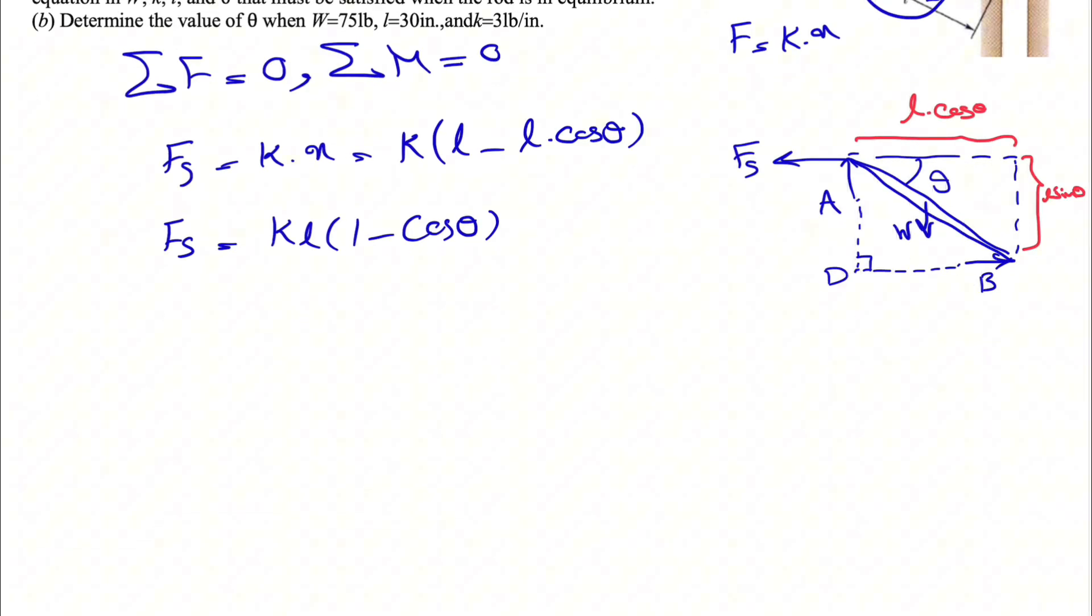We have to pick a point that we can find a moment about. We'll see that if we do the moment about point D, we can cancel out two of the unknowns, which are A and B, and we'll end up with the moment of the weight of the rod and F_S. So for F_S, we will have what we found in the previous step. The moment of F_S, first of all, is counterclockwise, so positive. The force is KL times 1 minus cosine of theta. That's F, and the distance that we have is L sine of theta.